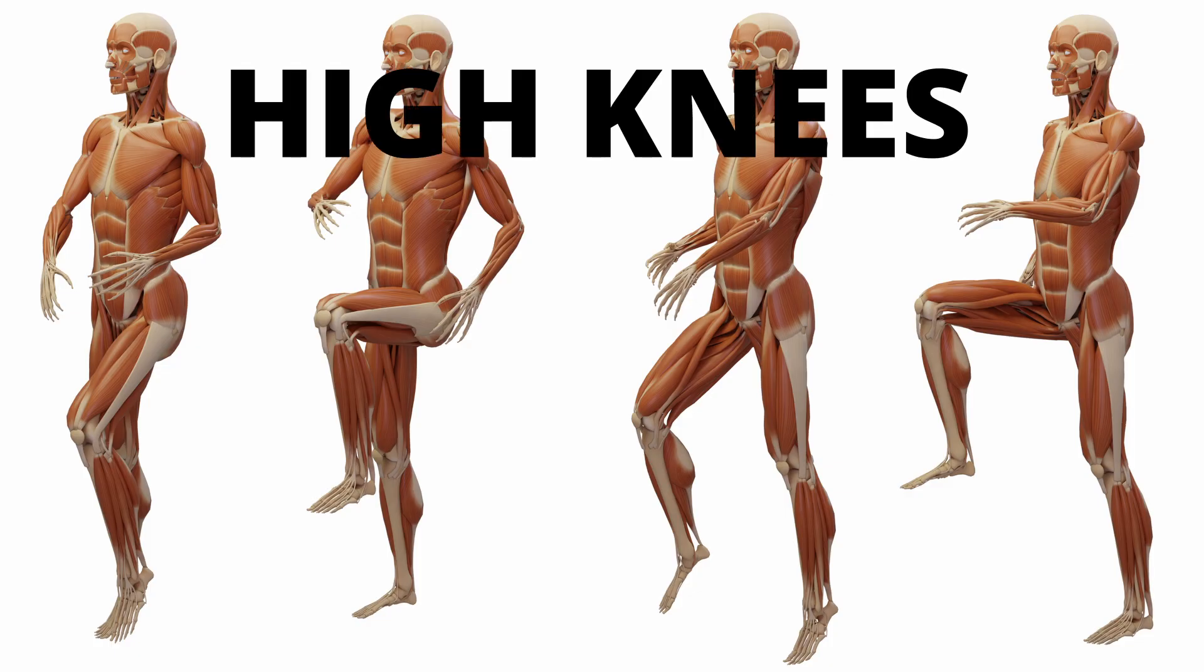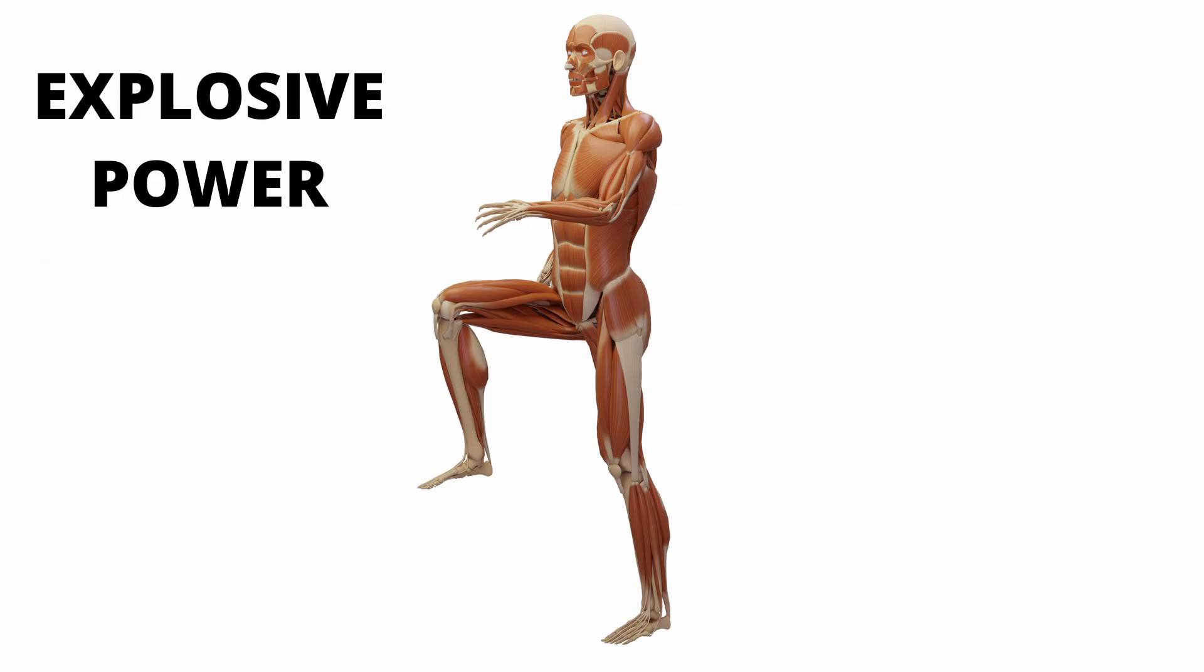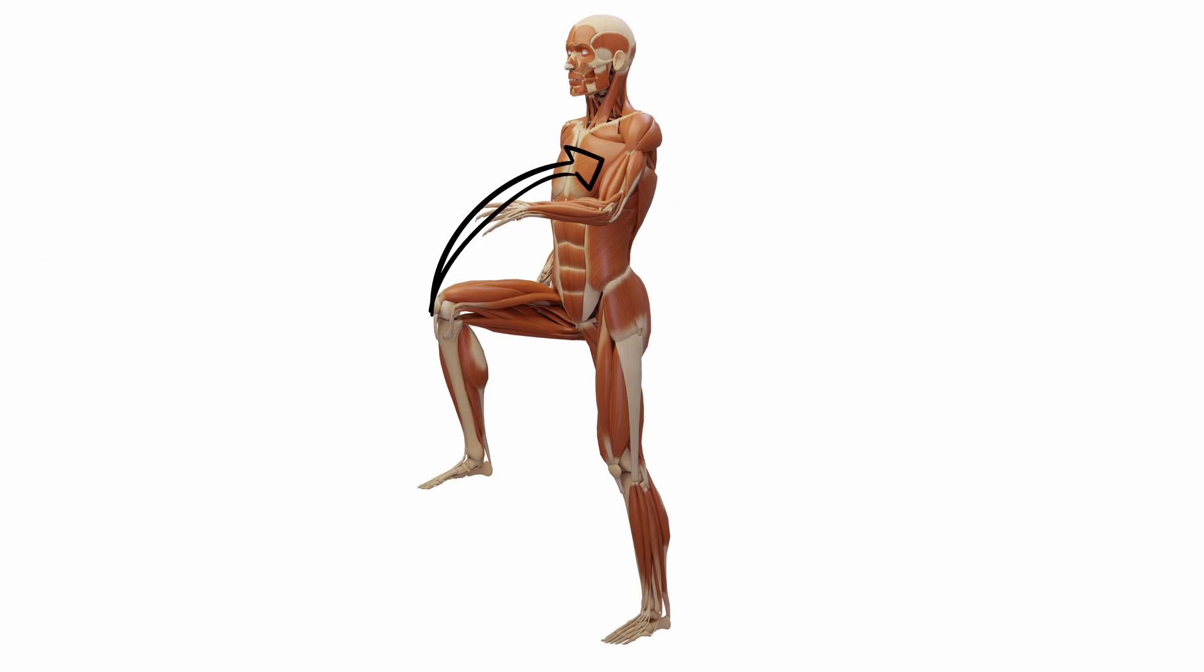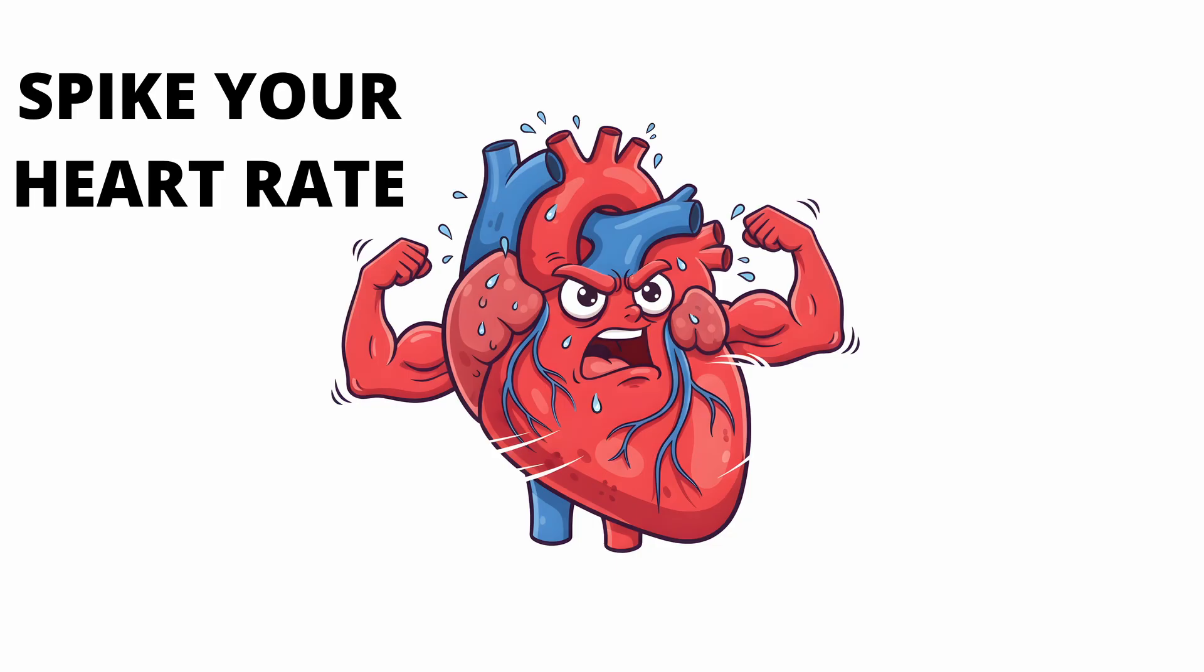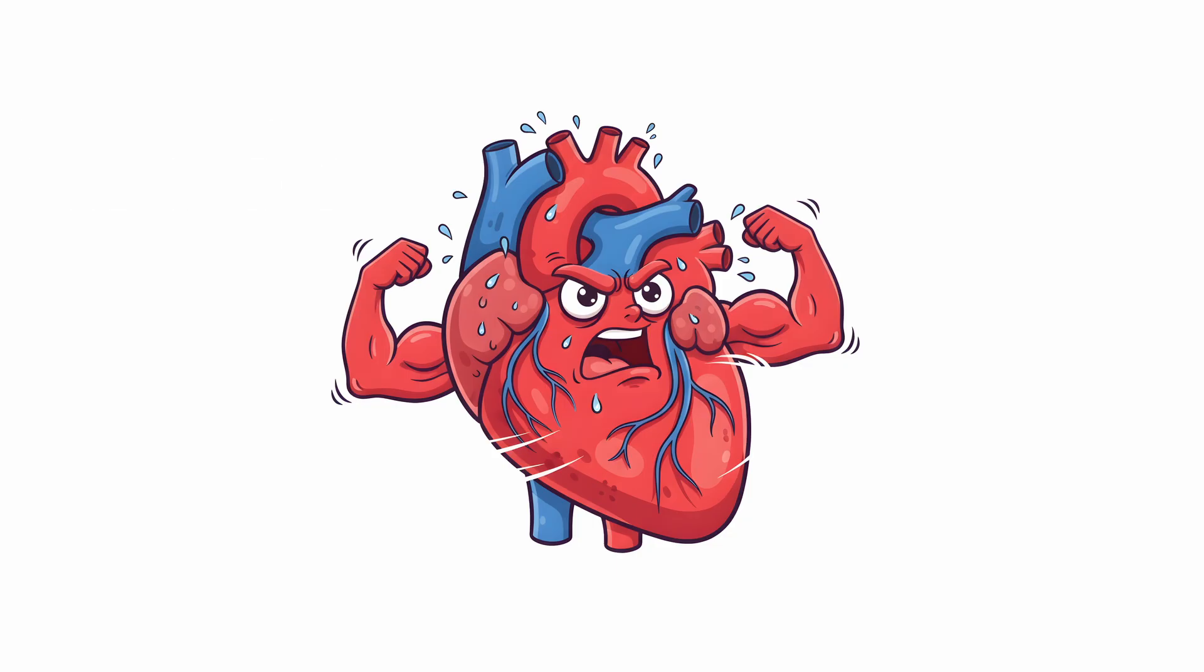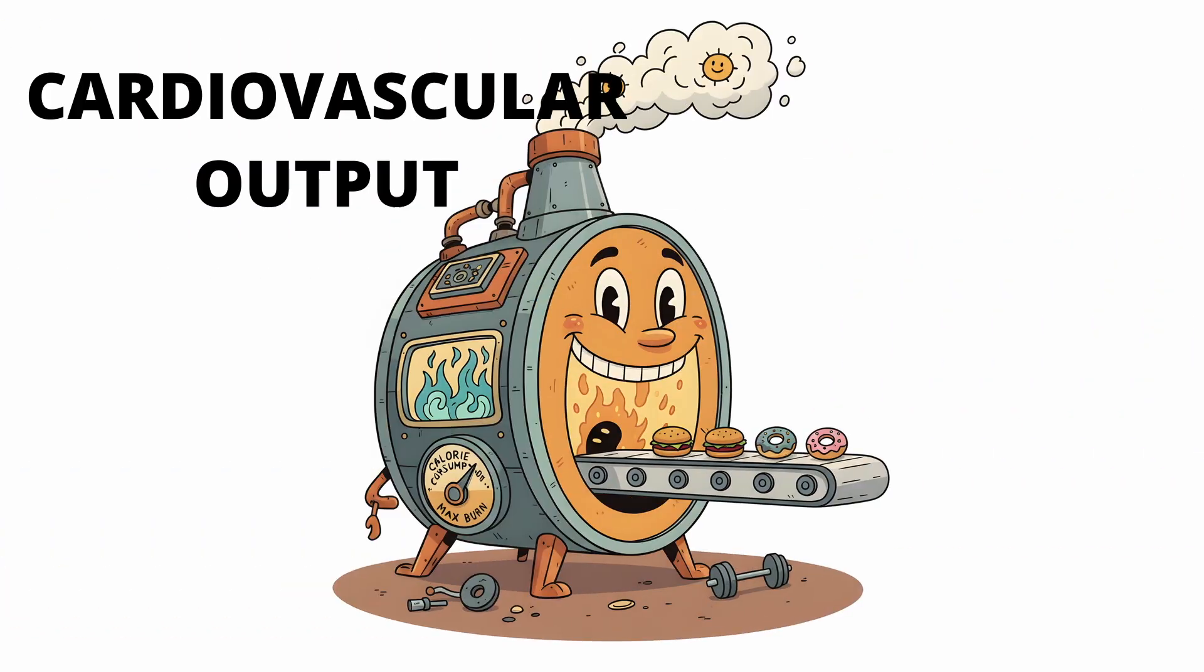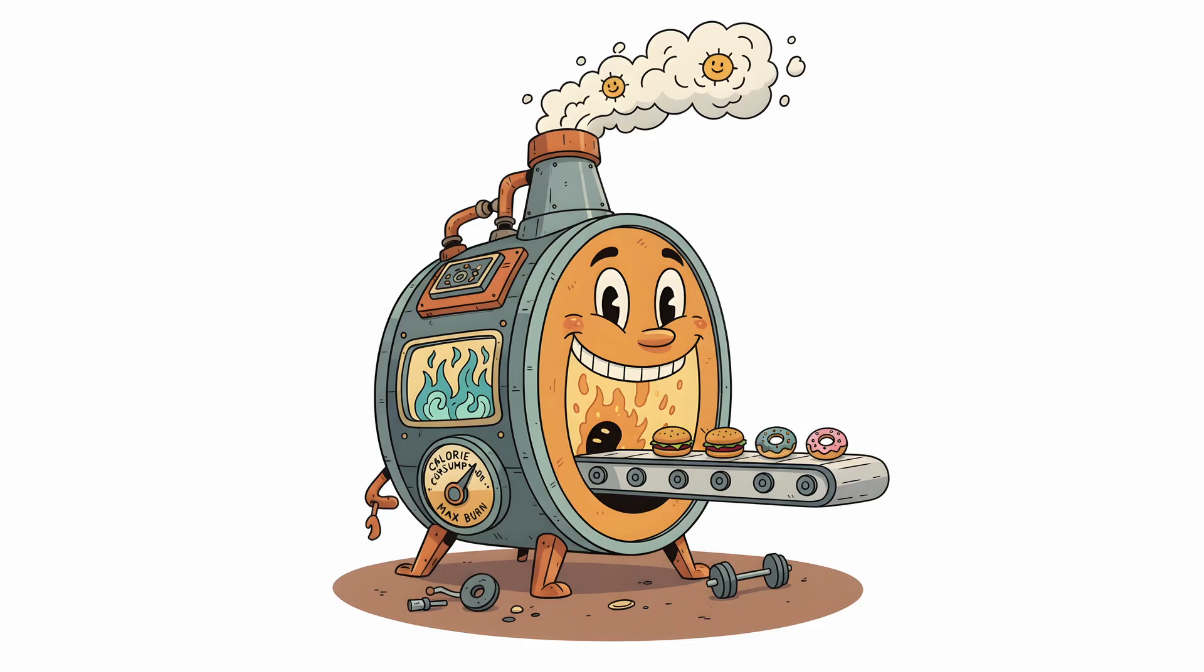Second, high knees. This isn't just running in place. The goal is explosive power, driving your knees up towards your chest. This movement is designed to spike your heart rate as quickly as possible. The primary goal here is cardiovascular output, which signals your body to burn energy at an accelerated rate.